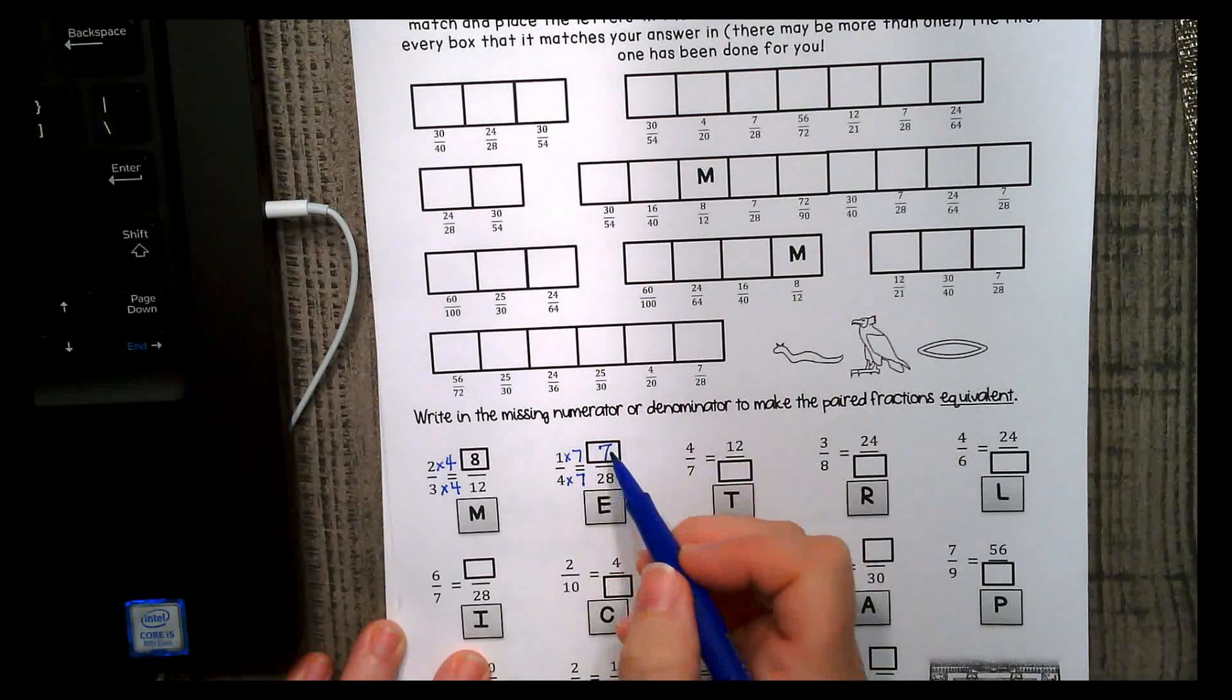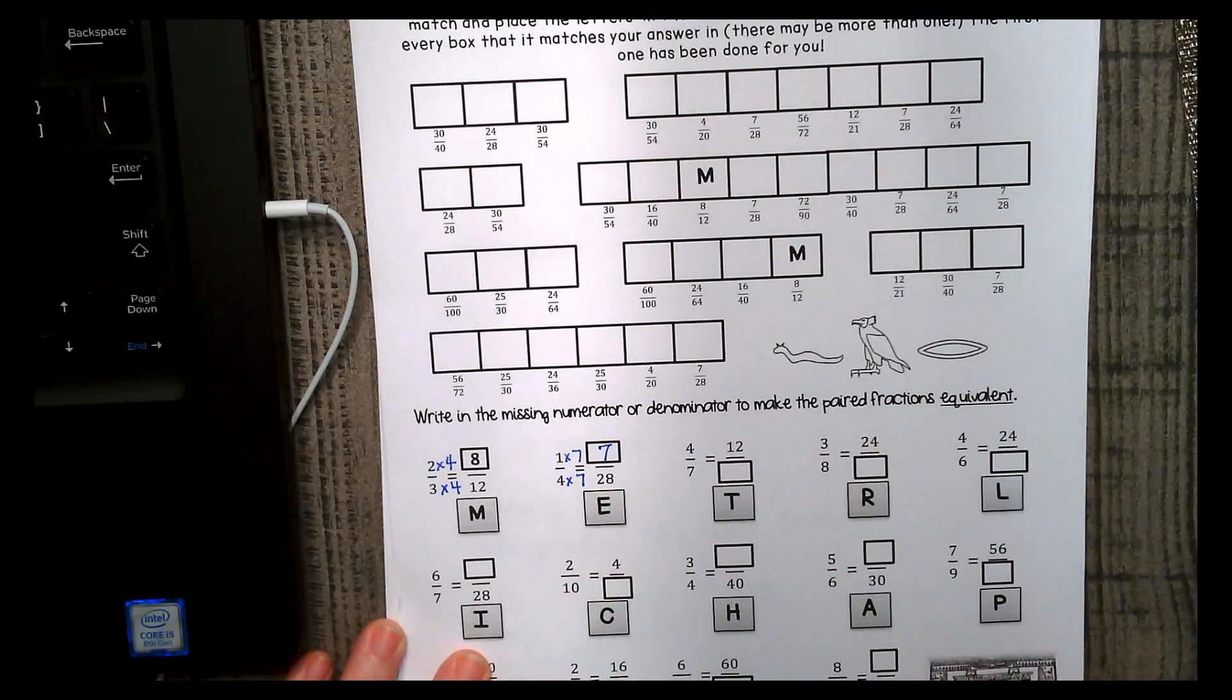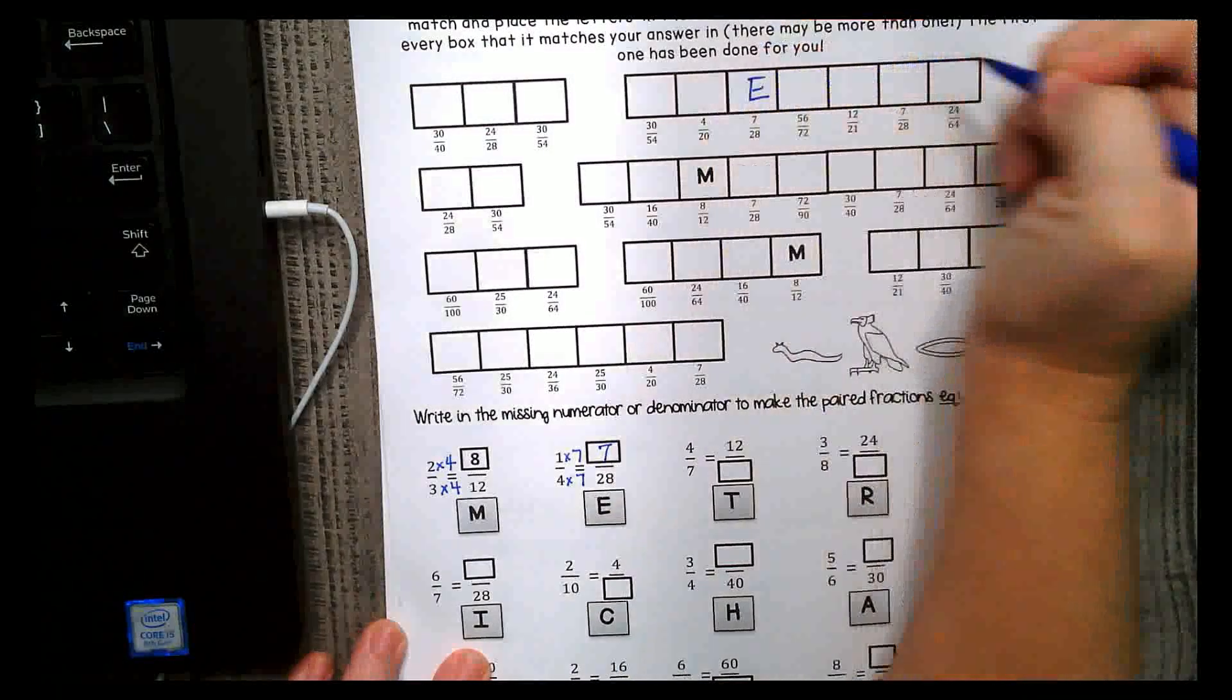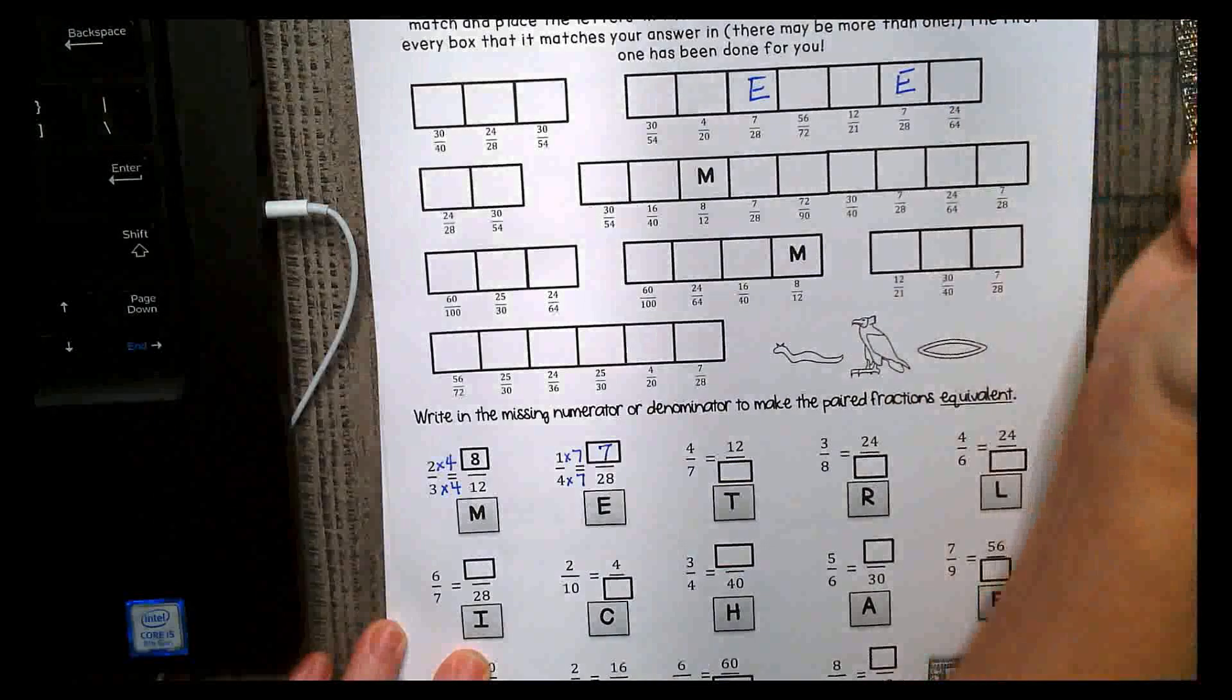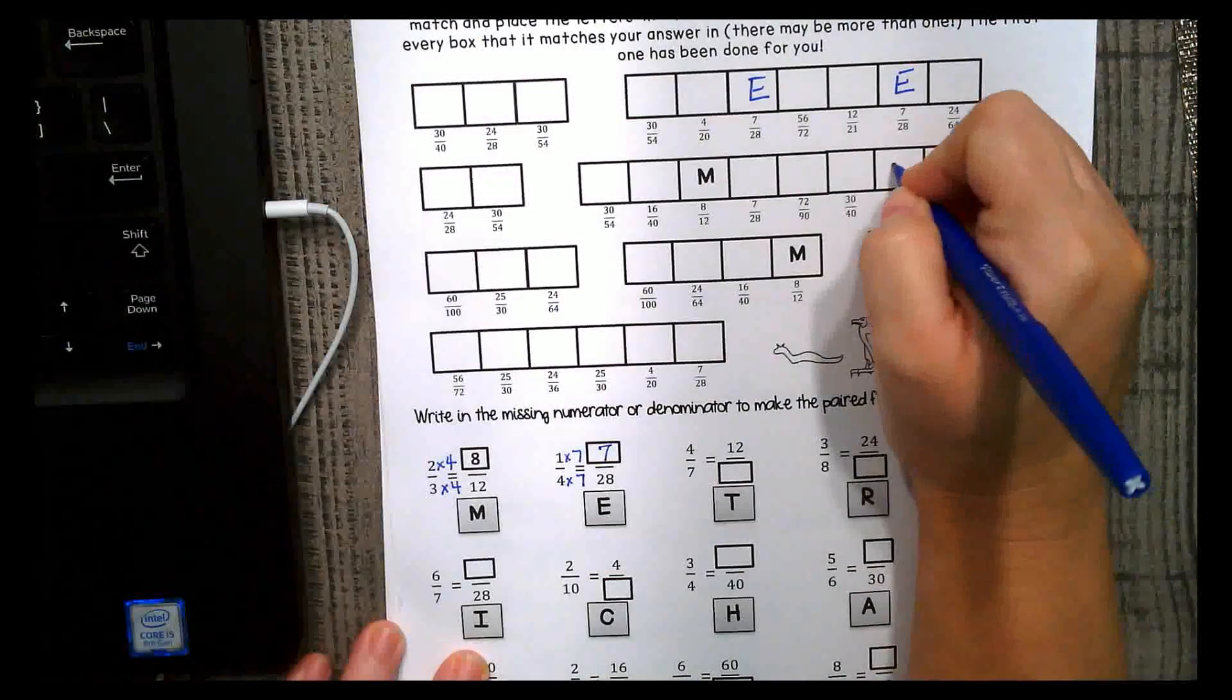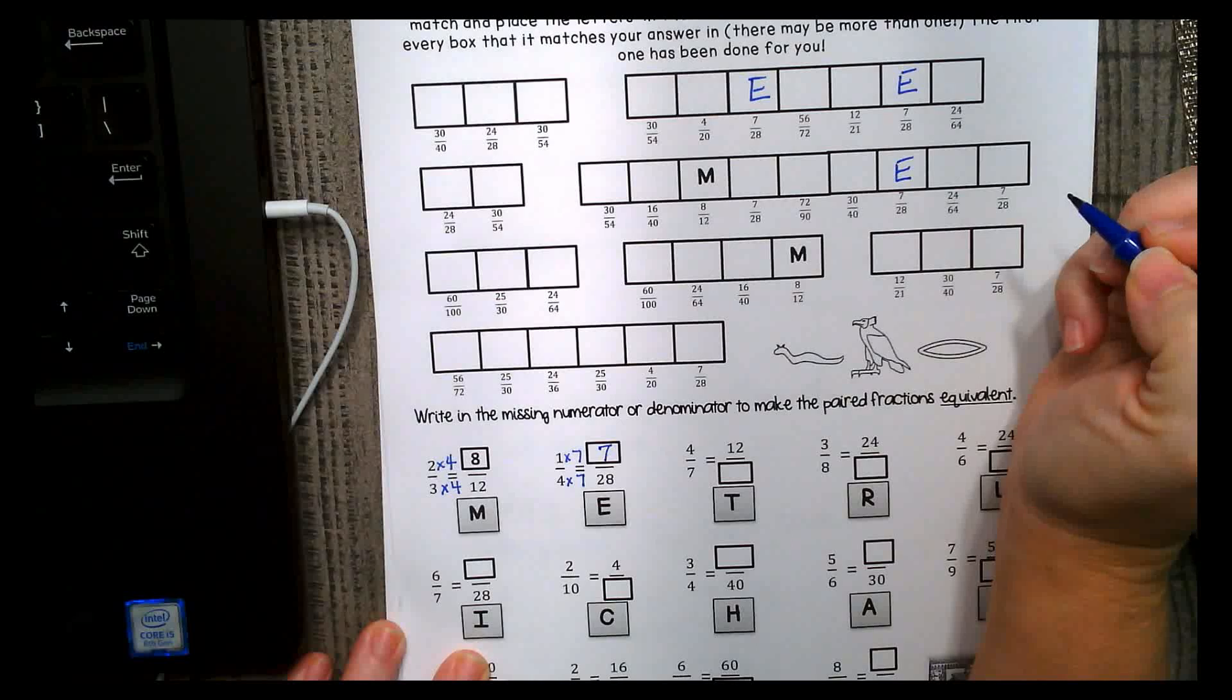Now, I'm going to go up into my clues, and wherever there's a 7 28ths, I'm going to put an E. And knowing E, and knowing E is a popular letter, there's probably going to be a few of them.